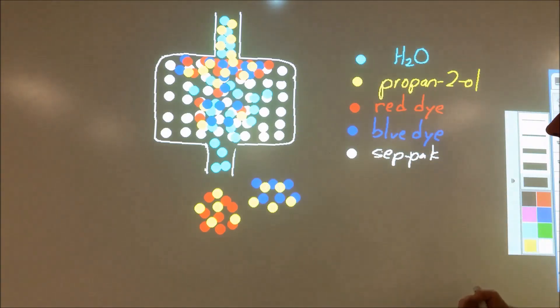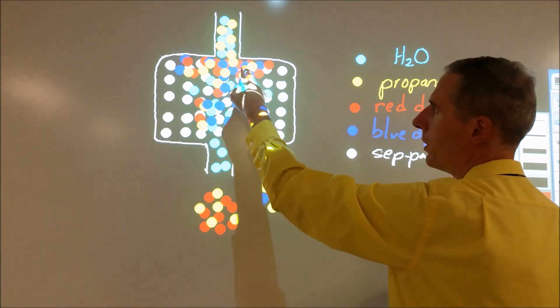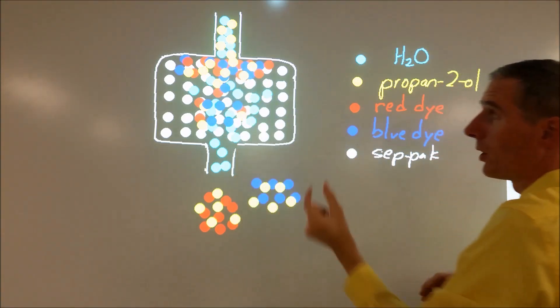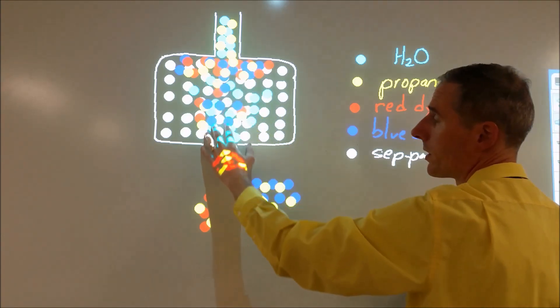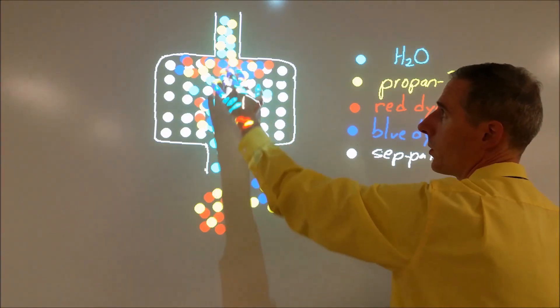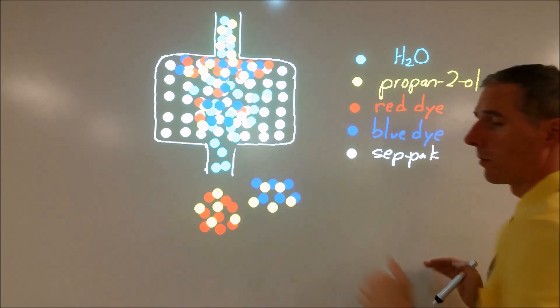And so we use chromatography to separate this based on how the red, blue, yellow, and white particles interact with each other. When the particles are moving with the yellow ones, they're interacting more strongly with the yellow particles. When they're not moving, they're interacting more strongly with the white particles.